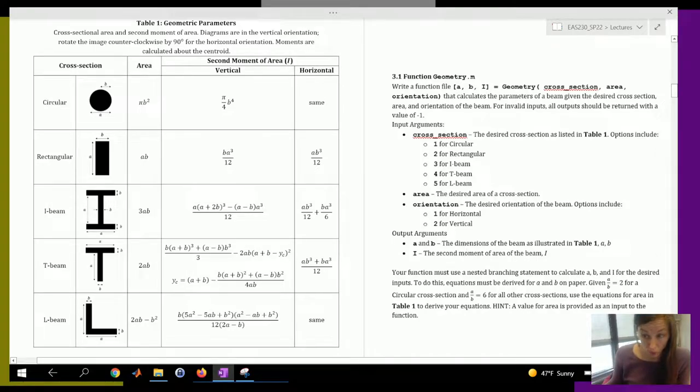Function number one is function geometry. This function is supposed to calculate the parameters of a beam given the desired cross section.